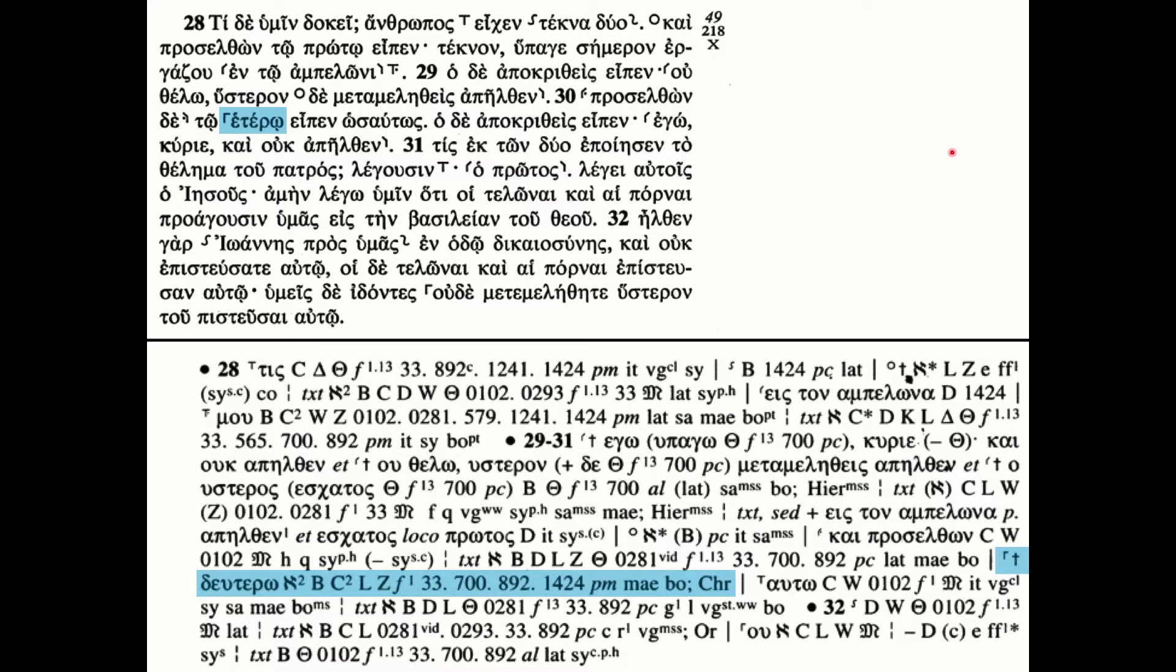B, C second corrector, L, Z and so on. All of those manuscripts have deutero as opposed to hetero. And this tells you that this word is replaced in these other manuscripts.